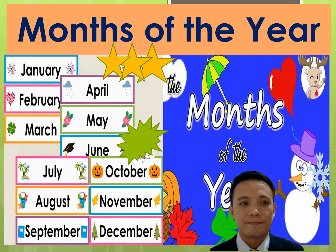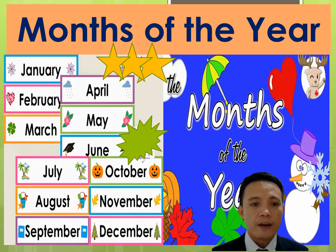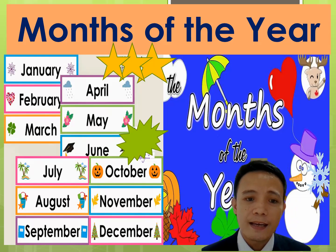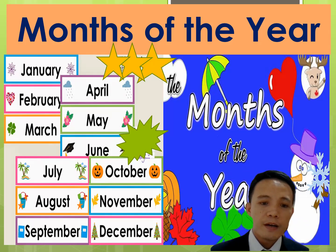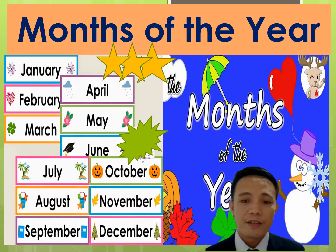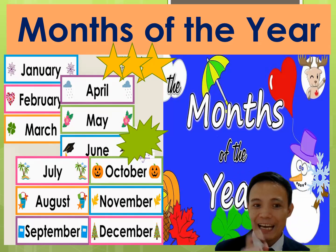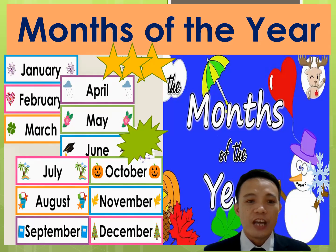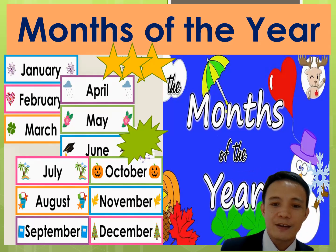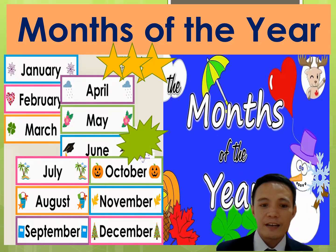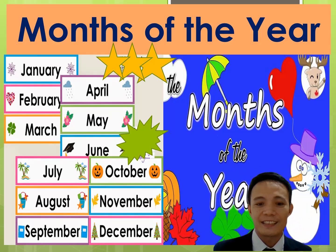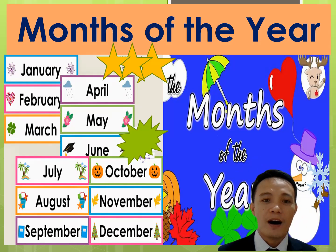One more time. Let's sing it together. January, February, March, and April, May, June, July, and August, September, October, November, December. These are the 12 months of the year. One more time. Well, let's sing them again — 12 months of the year.